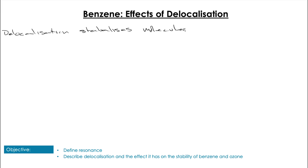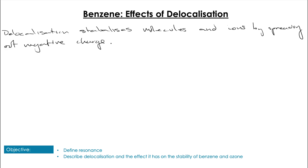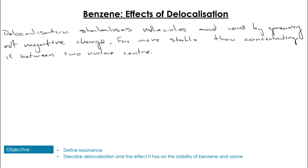We can also use benzene to highlight the effects of delocalization. Delocalization stabilizes molecules and ions by spreading out negative charge, which is much more stable than just positioning it between two nuclei, and this has an associated energy which is the delocalization stabilization energy. This means these molecules and ions are more stable than we might expect from single and double bonds alone — indeed this is exactly how polyatomic ions are able to stay stable.